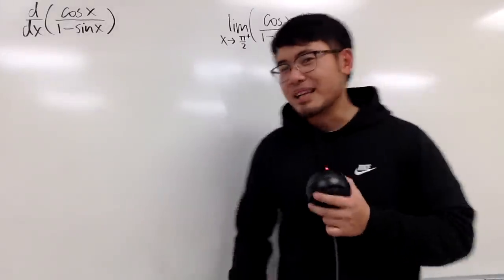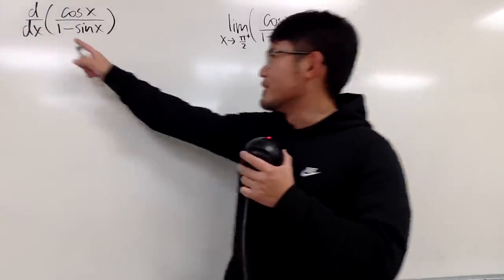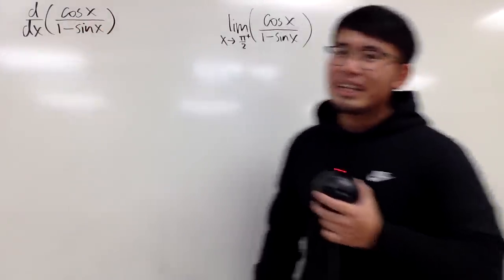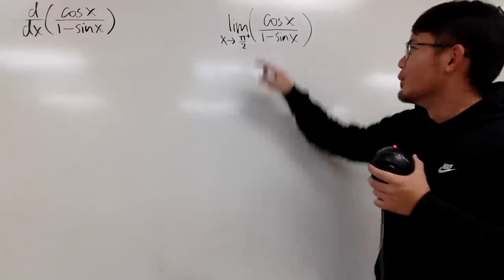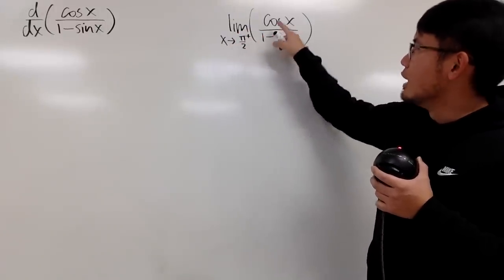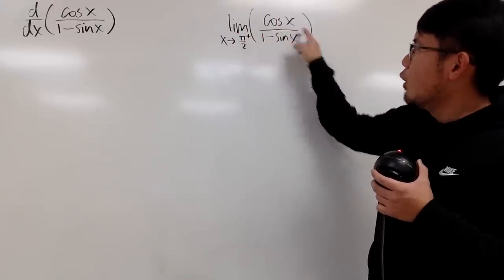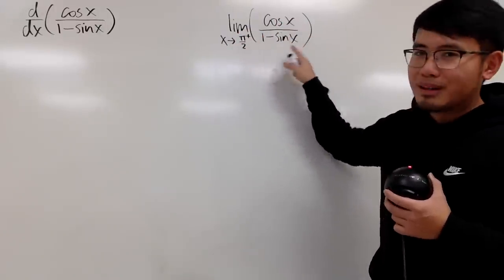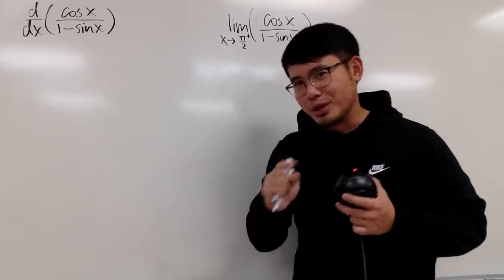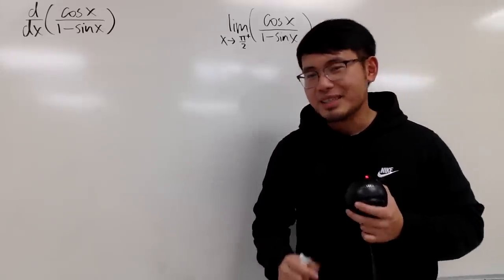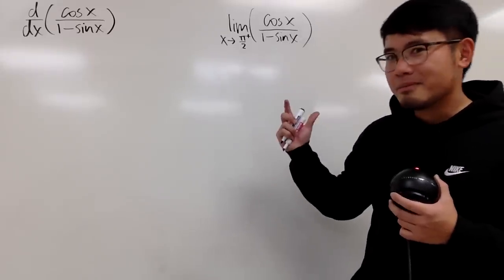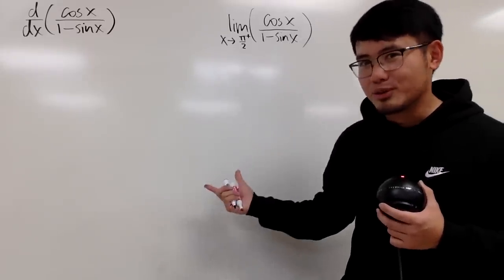I have two questions on the spot. The first one is that we have to differentiate cosine x over 1 minus sine x, and then for the second one, we have to take the limit as x approaching pi over 2 plus of cosine x over 1 minus sine x. These two questions are really good for your calculus 1 class, but be sure you notice that there are two very different questions as well.